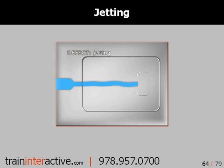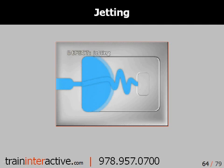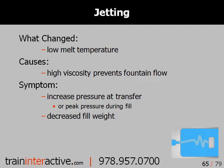Jetting is a unique defect that occurs when a stream of material shoots into the mold at the start of fill rather than creating a smooth flow front. A low melt temperature increases the material's viscosity, which can prevent the material from creating a smooth fountain flow as it enters the mold. You should observe an increase in pressure at transfer and a drop in the fill-only part weight.